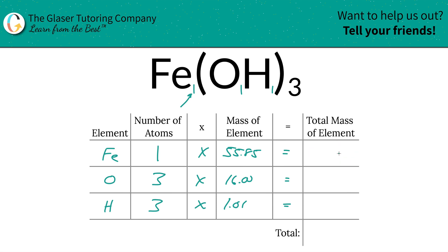So the total mass here of the element now, we're just going to simplify by multiplying the row on across. So the total mass of iron here is 55.85. The total mass of oxygen is going to be 48. And then the total mass of hydrogen is 3.03.